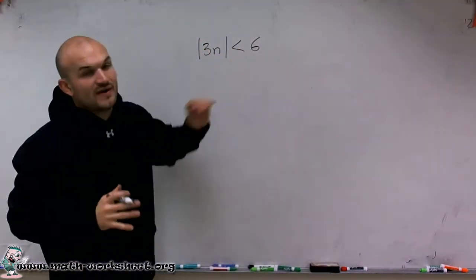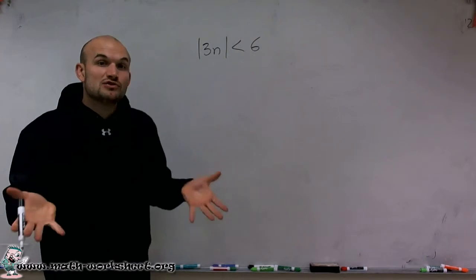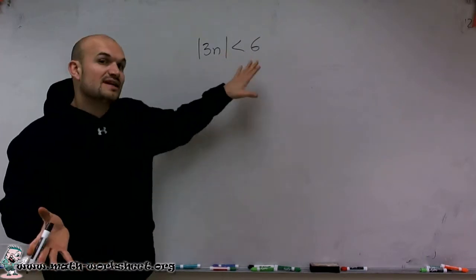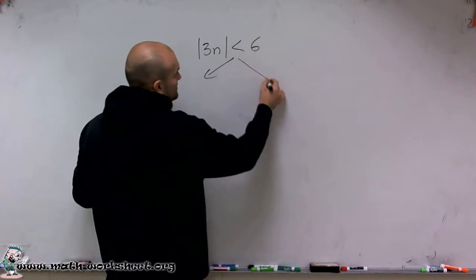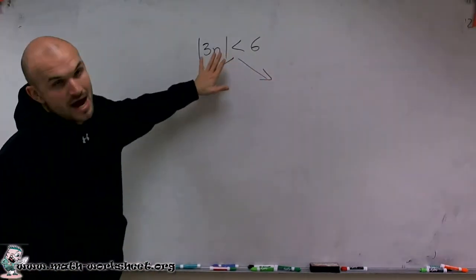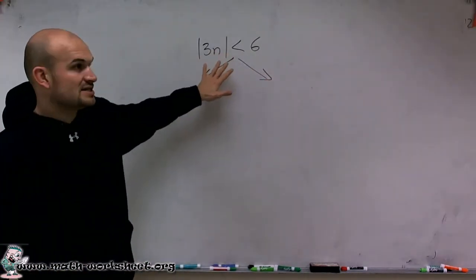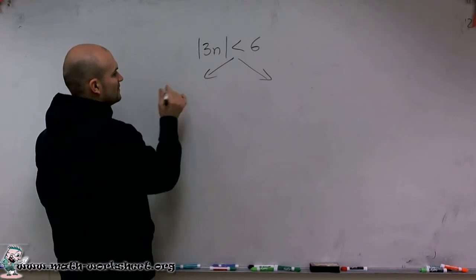When we have an absolute value of an inequality, we need to set up our two solutions so that we can get rid of the absolute value sign. So what I'm going to do is every single time when I set up, I make sure that my absolute value sign is isolated. Then I'm going to set up two different situations.